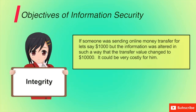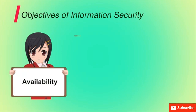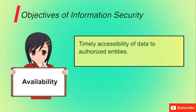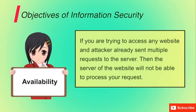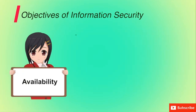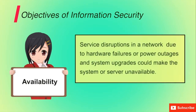The integrity of the message should be maintained for secure transmission. Third is availability — ensuring timely and reliable access to and use of information. A loss of availability is the disruption of access to or use of information. For example, if an attacker sends multiple requests to a server, the server will not be able to process your request, meaning data is unavailable to the authorized user. Service disruptions due to hardware failure, software failure, power outages, or system upgrades could also make the server unavailable.